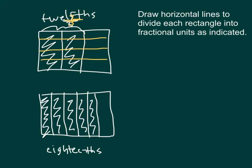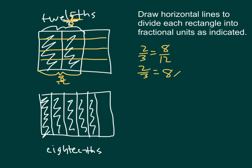Counting across, we have 1 through 12 — twelfths. So here, we have two-thirds, and we have to properly label it. We have that equal to 1, 2, 3, 4, 5, 6, 7, 8 — 8 twelfths. Let's write two-thirds equaling eight-twelfths. Two-thirds does equal 8 times one-twelfth.